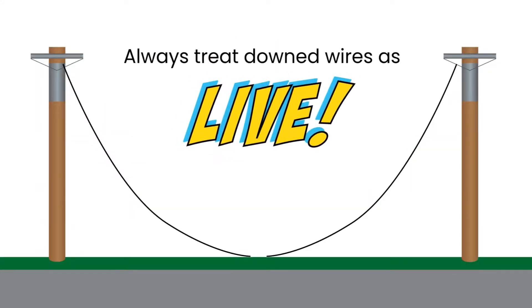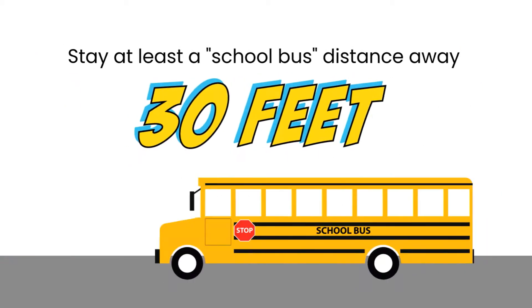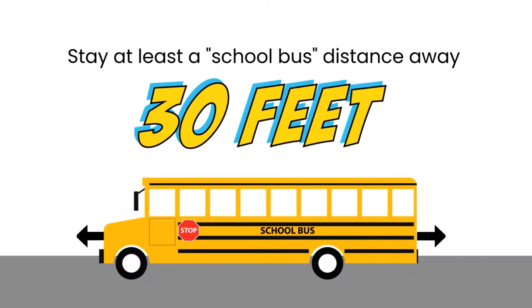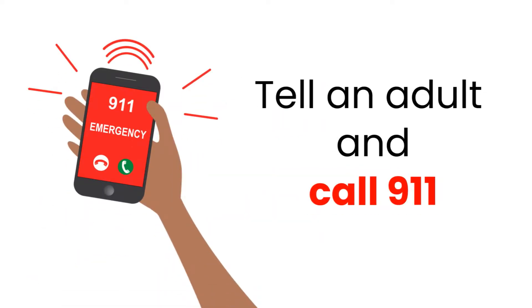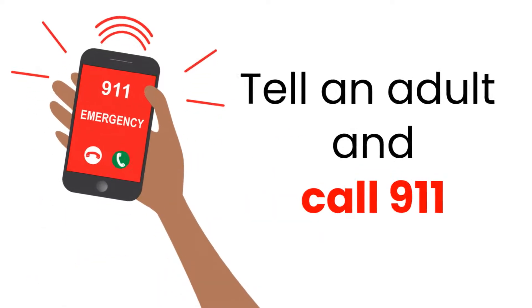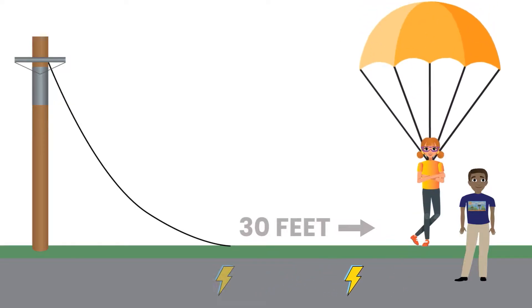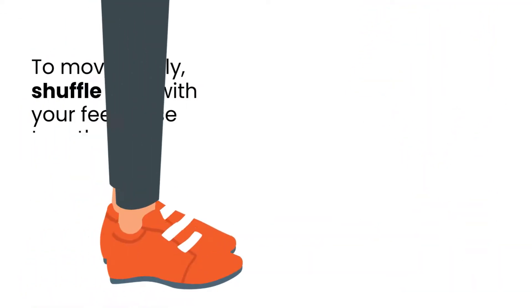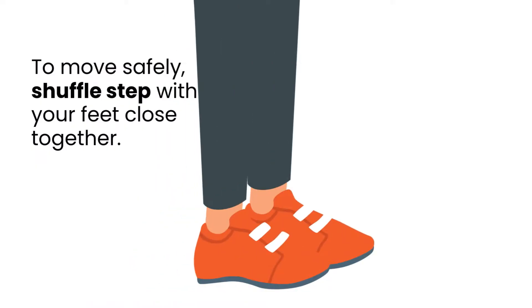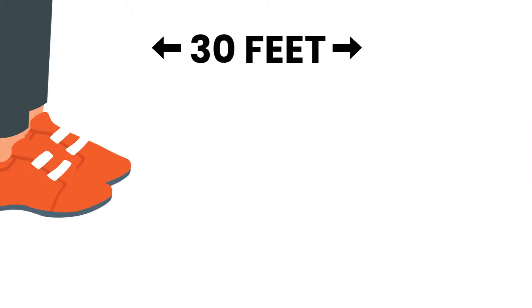If you ever see a downed power line, or even one that seems to be hanging unusually low, stay at least 30 feet away from it. This is about the length of a regular school bus. Tell an adult and make sure one of you calls 911 right away. Electric current can travel through the ground, so keeping your distance is really important. If the line is closer to you than 30 feet because you're in the wrong place at the wrong time, shuffle step with your feet very close together to inch your way away from the line, or bunny hop with both feet together until you are a safe distance. You want to keep both feet in the same voltage zone to avoid shock.